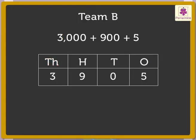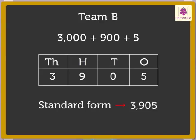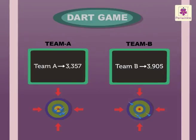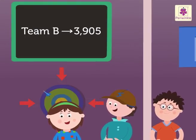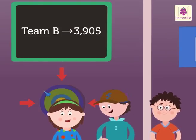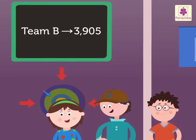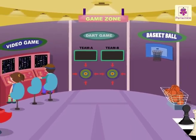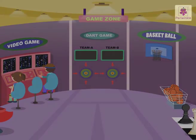We found the number in standard form — that is three thousand nine hundred five. So Team B scored three thousand nine hundred five. Team B won the competition! Definitely you must have had fun learning at the game zone.